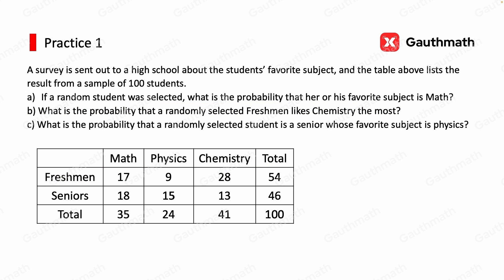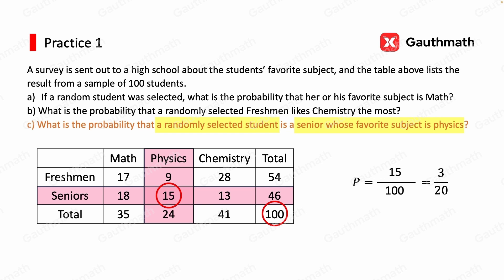Finally, we're at Part C. What is the probability that a randomly selected student is a senior whose favorite subject is physics? Since we're choosing a random student again — not a random freshman or senior — our denominator is once again 100. The number of students who are seniors and also like physics the most is 15, so that's the numerator. The probability is 15 over 100, which simplifies to 3 over 20.